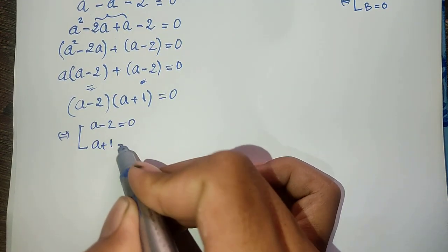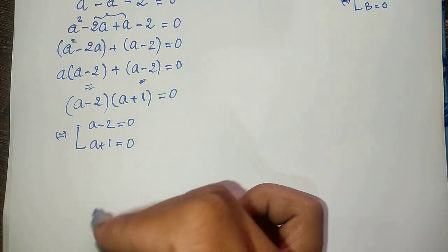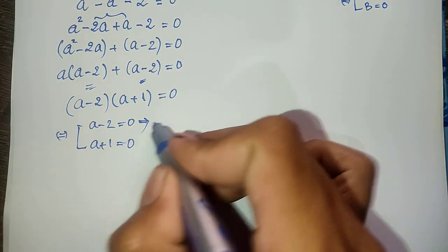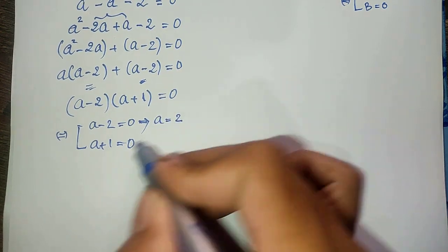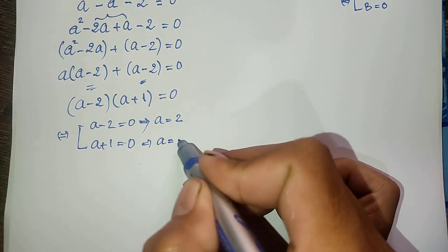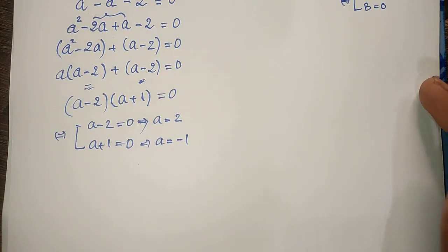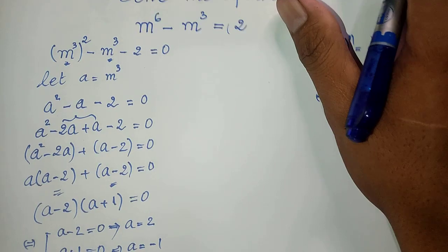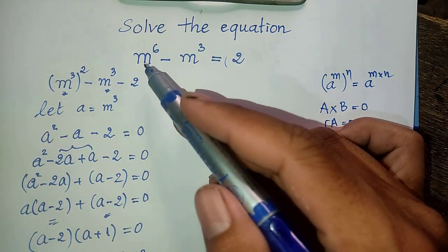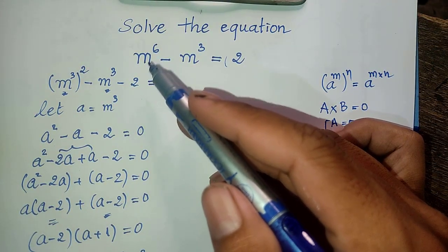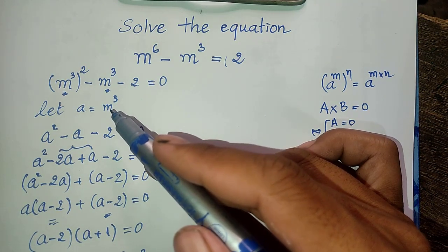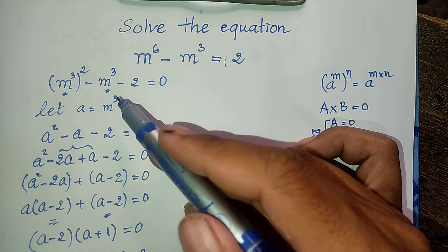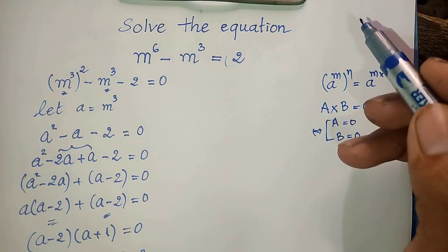We can see the common factor (a minus 2), so we take it out: (a minus 2) times (a plus 1) equals 0. So now we have two factors equal to zero, giving us a equals 2 and a equals minus 1. Now we have two values of a, but the equation's variable is m. To find the values of m, we recall that a equals m power 3.